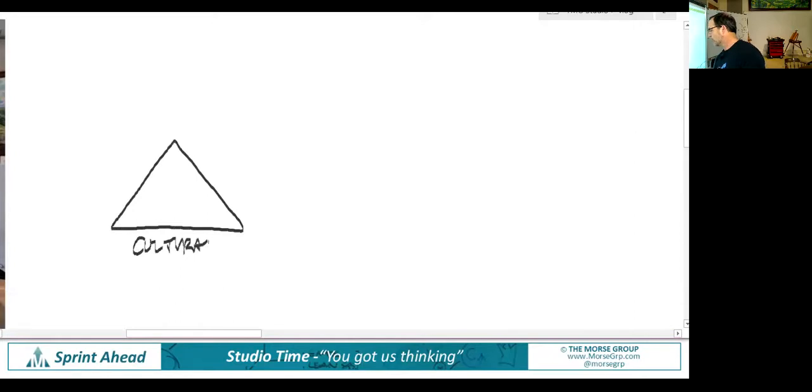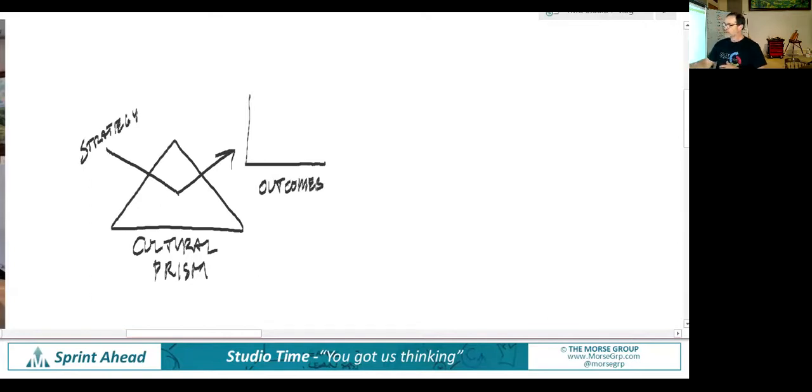This is the concept that culture acts like a prism, as a metaphor of a light prism. Any strategy you put against that prism is going to get refracted, and that refraction will establish your outcomes. Depending on this relationship between strategy and culture, outcomes can be very good or mediocre or not probably what you want.